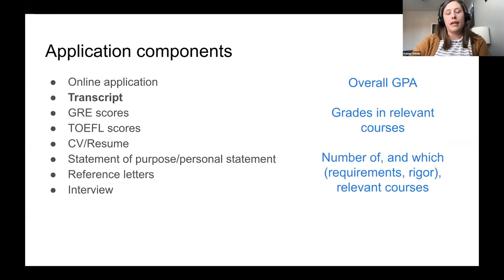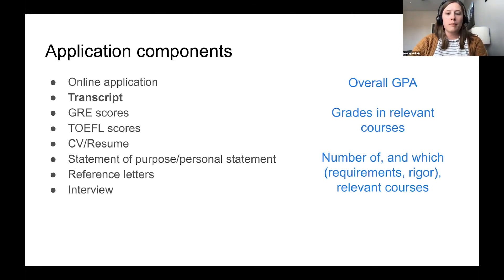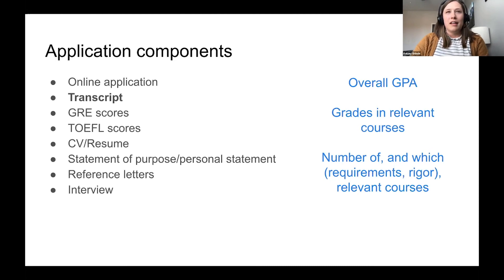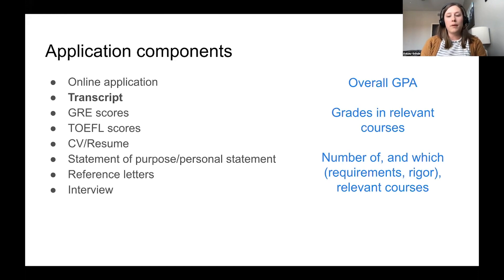Another part of your application packet is your transcript. The admissions committee will look at your overall GPA, but most importantly they'll focus on your grades in relevant courses — they care much more about how you've done in math and stats than in art classes. They'll also check which classes you've taken, whether you've taken the required prerequisites listed on the program website, and generally how many and how rigorous your statistics and math classes have been.